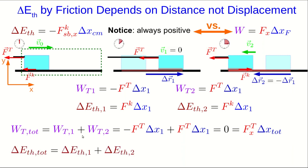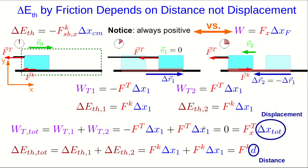On the other hand, the thermal energies cannot add to zero because they're both positive. And in fact, what we end up getting is the magnitude of the friction times this 2 delta x1, which is actually the distance, not the displacement, the distance that the block traveled.